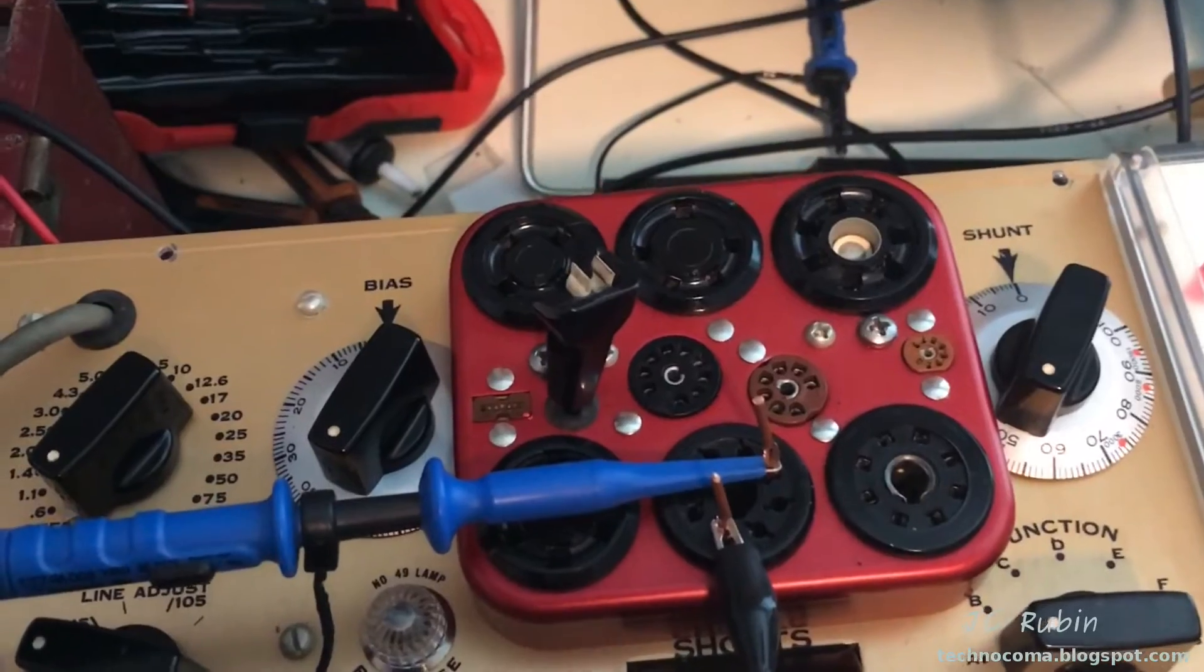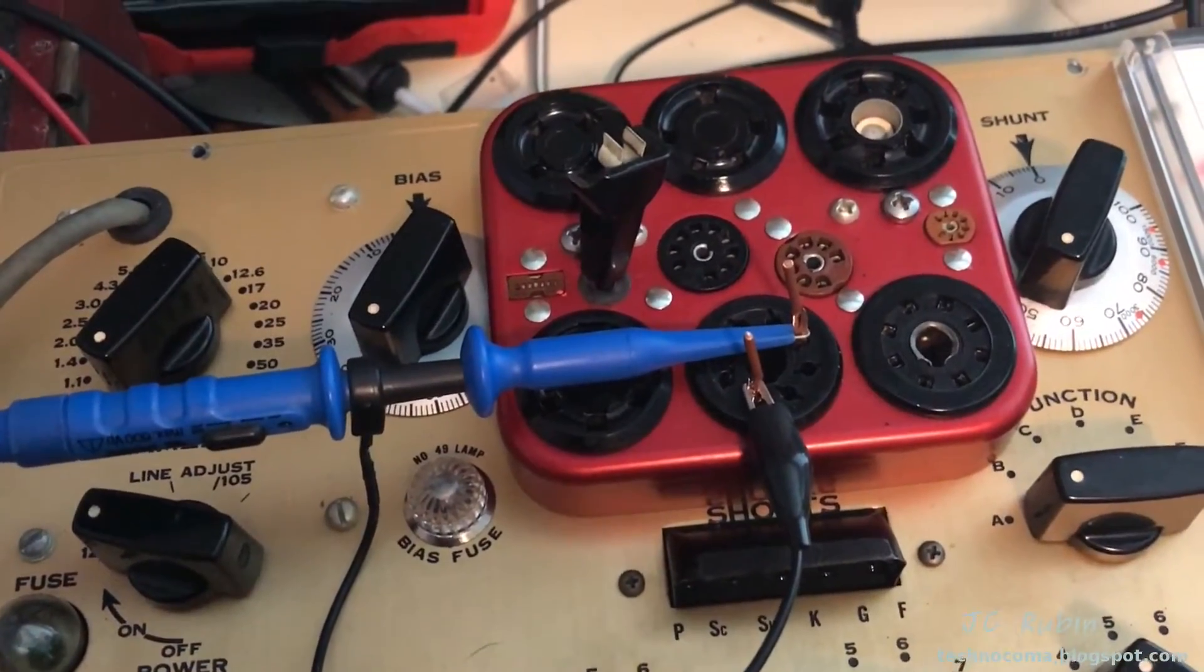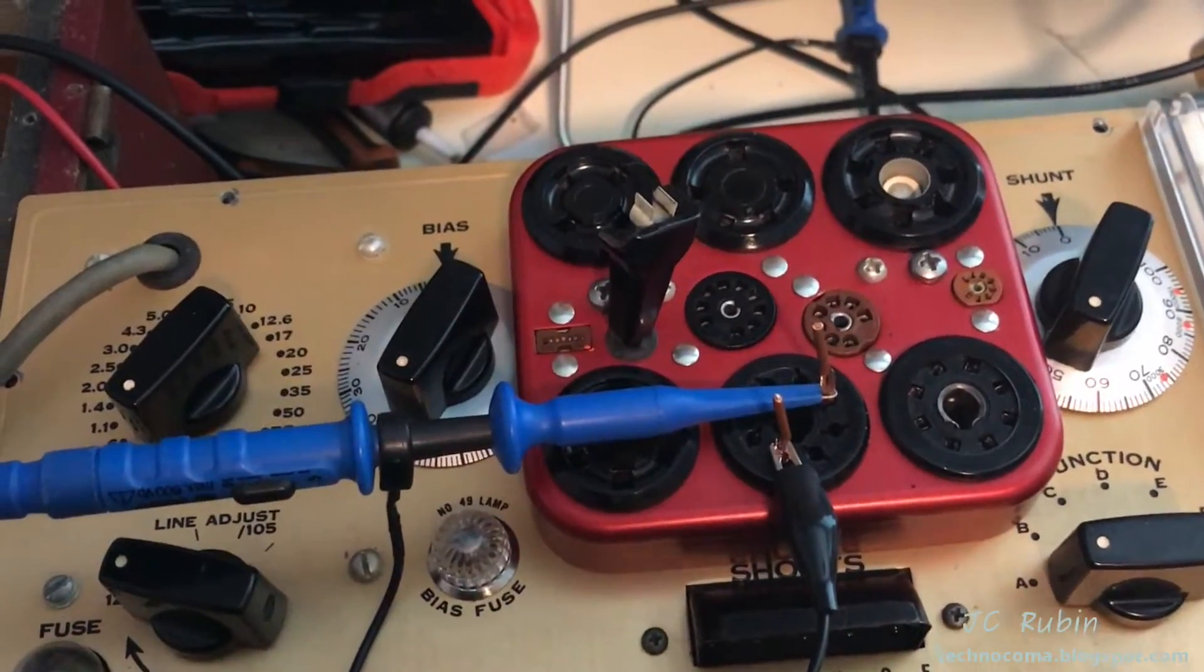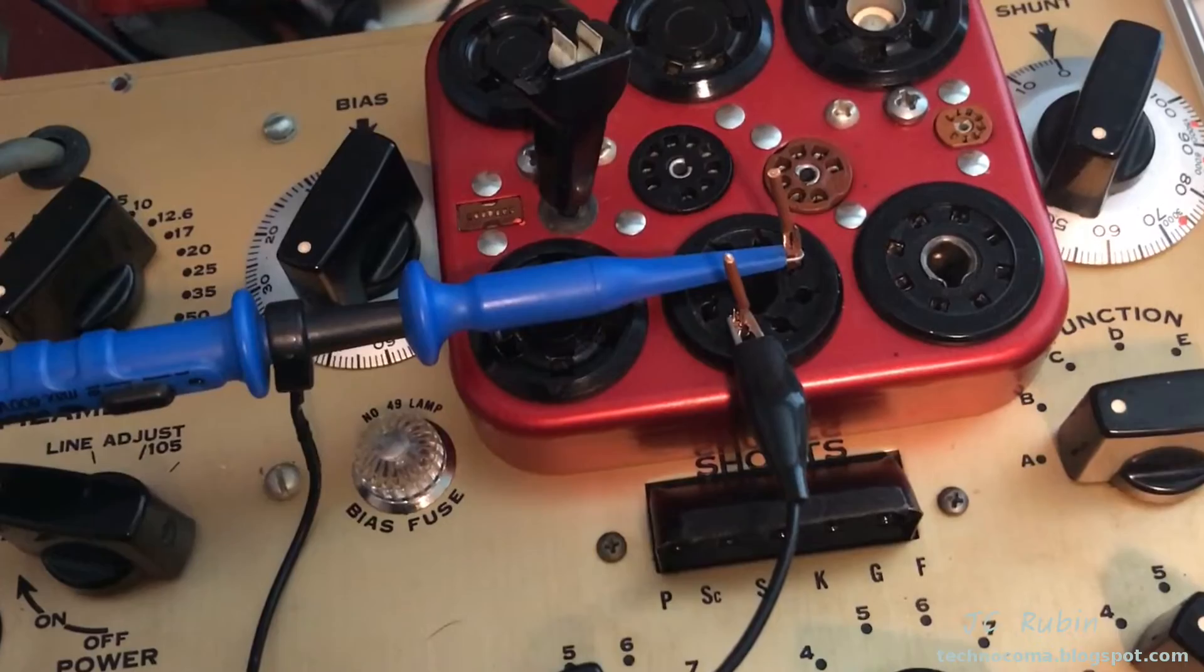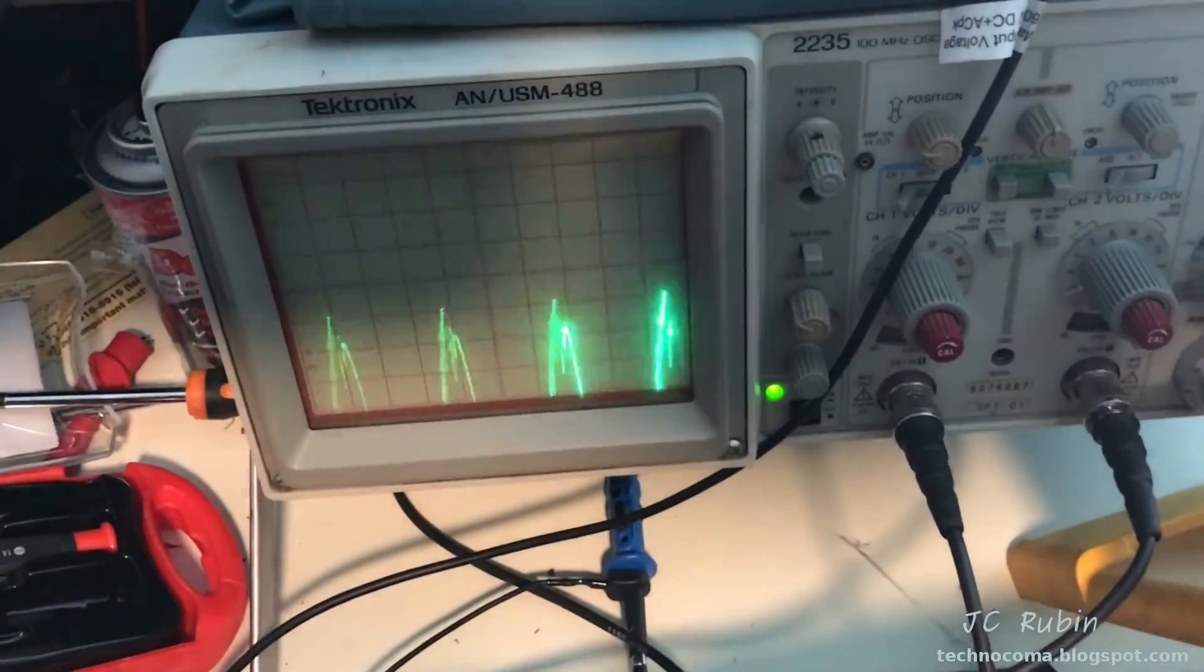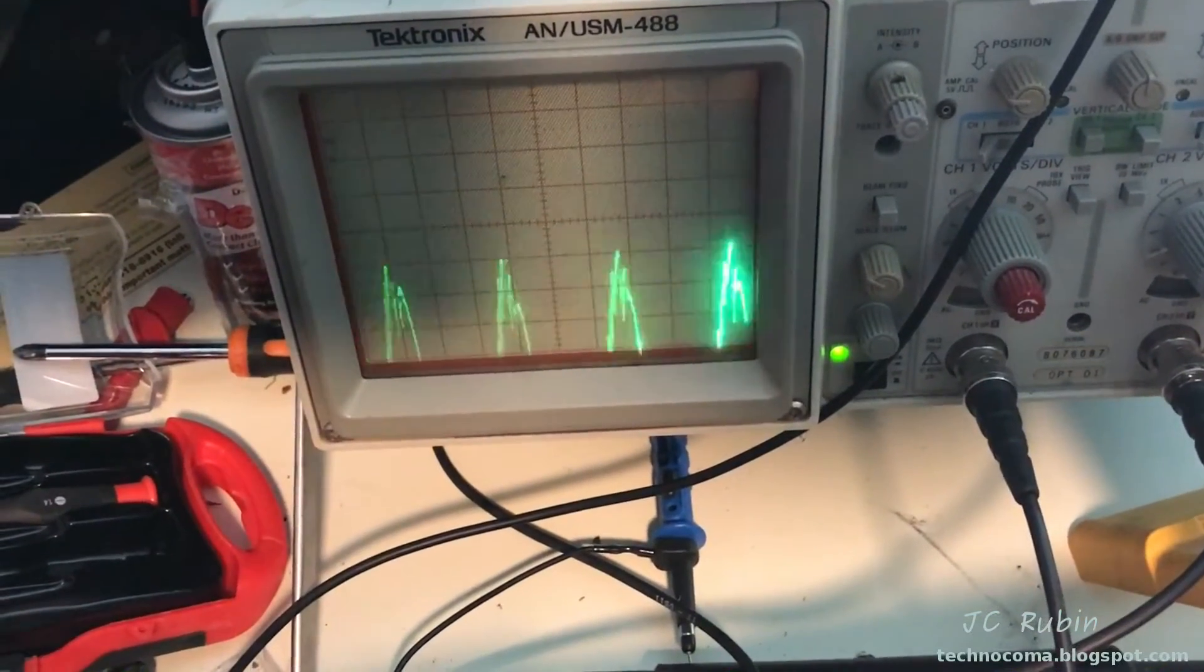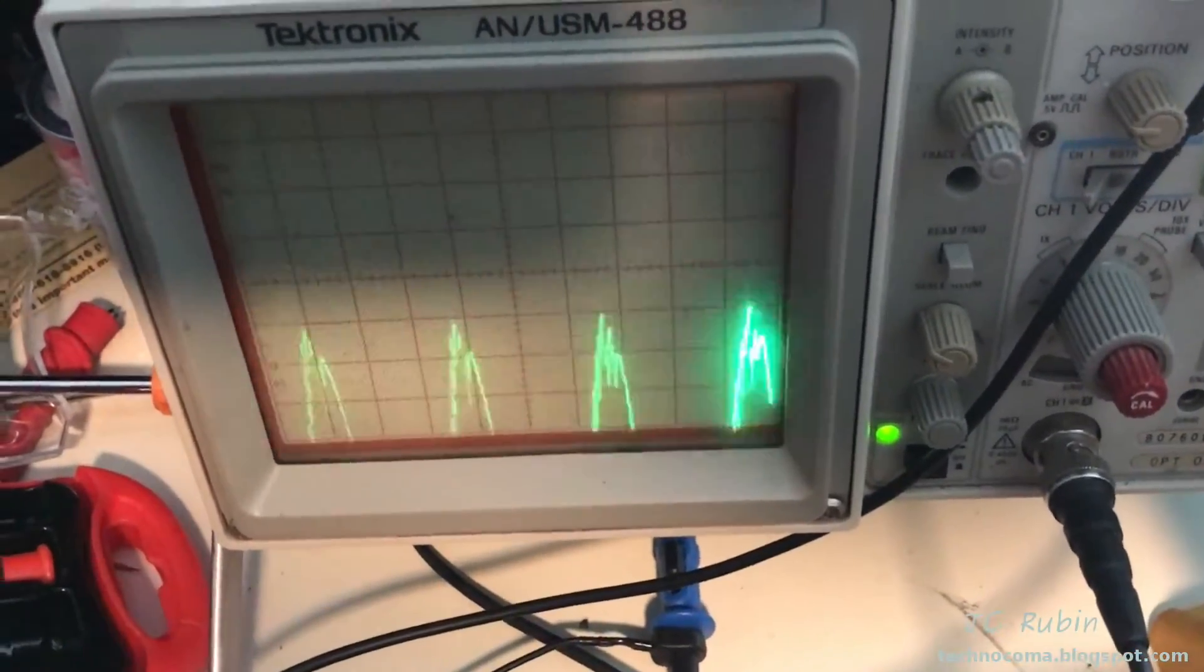This next step is part of the plate supply test. It's not explicitly mentioned in any manual, but it was on the website and seemed like a good idea. It was explained very nicely, so I decided to do it. I've got my oscilloscope here on pins three and eight. When I press the test button, I'm going to see the output of that rectifier, and I'm looking for an even pattern.